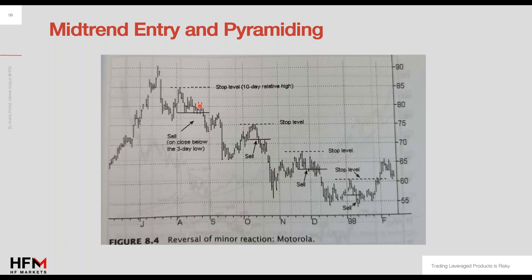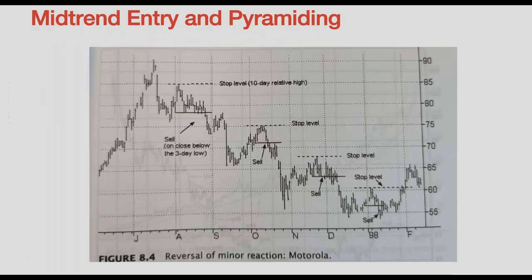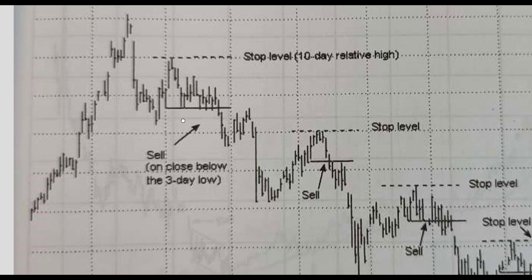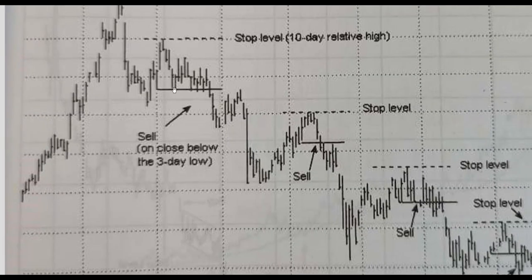We have a temporary support level — the asset came down, stopped on a previous low, and consolidated for a few days. A close below this support level will be our sell signal, with the stop loss at the relative high.